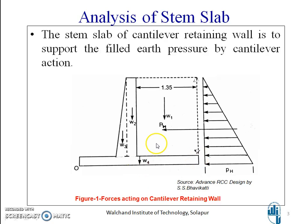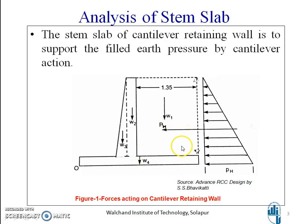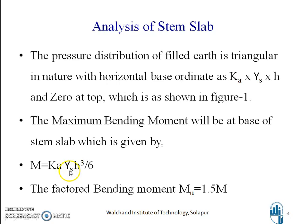The horizontal force pH equals half·k·γs·h·h, that is h squared. That is the area of the pressure diagram which gives us pH. This pH acts at a distance of h/3 from the base. So the maximum bending moment equals pH × h/3, which is half·k·γs·h²·(h/3). This gives us the maximum bending moment at the base of the STEM Slab — the critical section — as k·γs·h³ divided by 6.